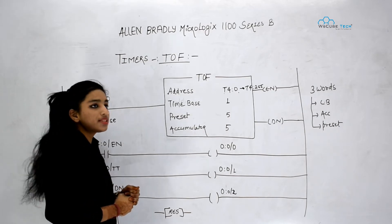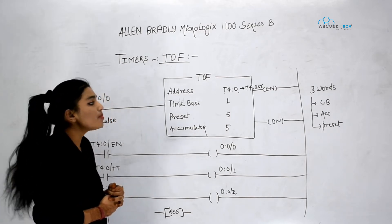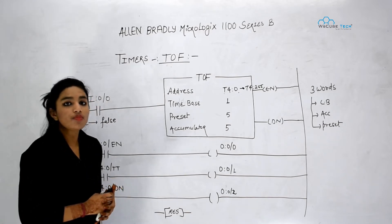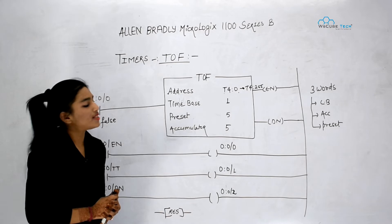Then next we have got timebase. Timebase is the least count or the minimum value of our timer that it will count. So it can be 1 second, 0.1 second and 0.01 second.